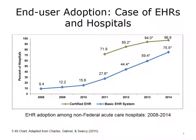As depicted by this diagram, the adoption of EHRs has increased dramatically among hospitals. Indeed, the adoption of basic EHR systems, which include more features than certified EHRs, has increased from less than 10% in 2008 to more than 75% in 2014. This has enabled eligible hospitals to develop local population health repositories and advance their population analytics.